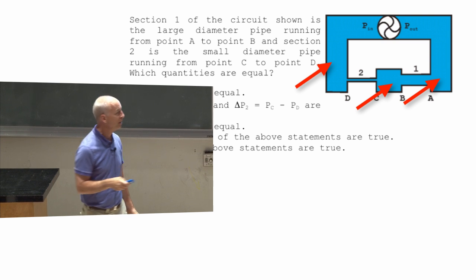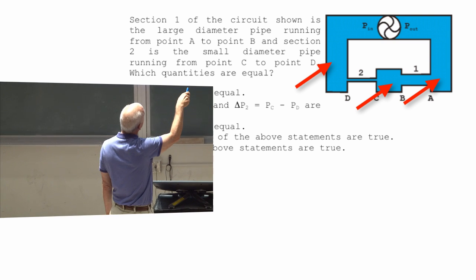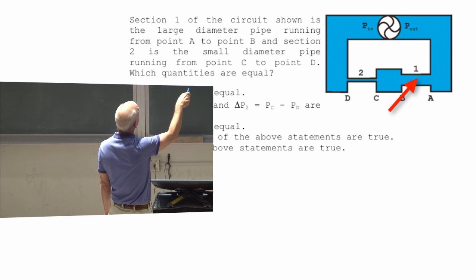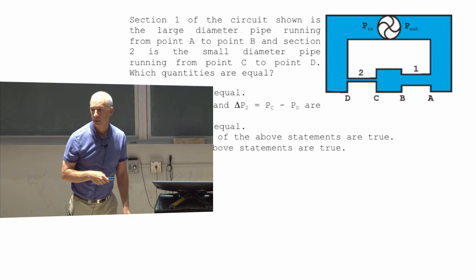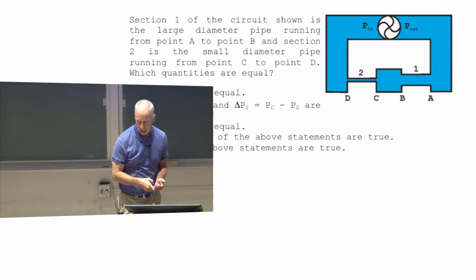So if I look at this pipe, I would say no resistance, no resistance, no resistance. Small resistance, no resistance, big resistance, and then no resistance again. Just because of the size of the pipe.